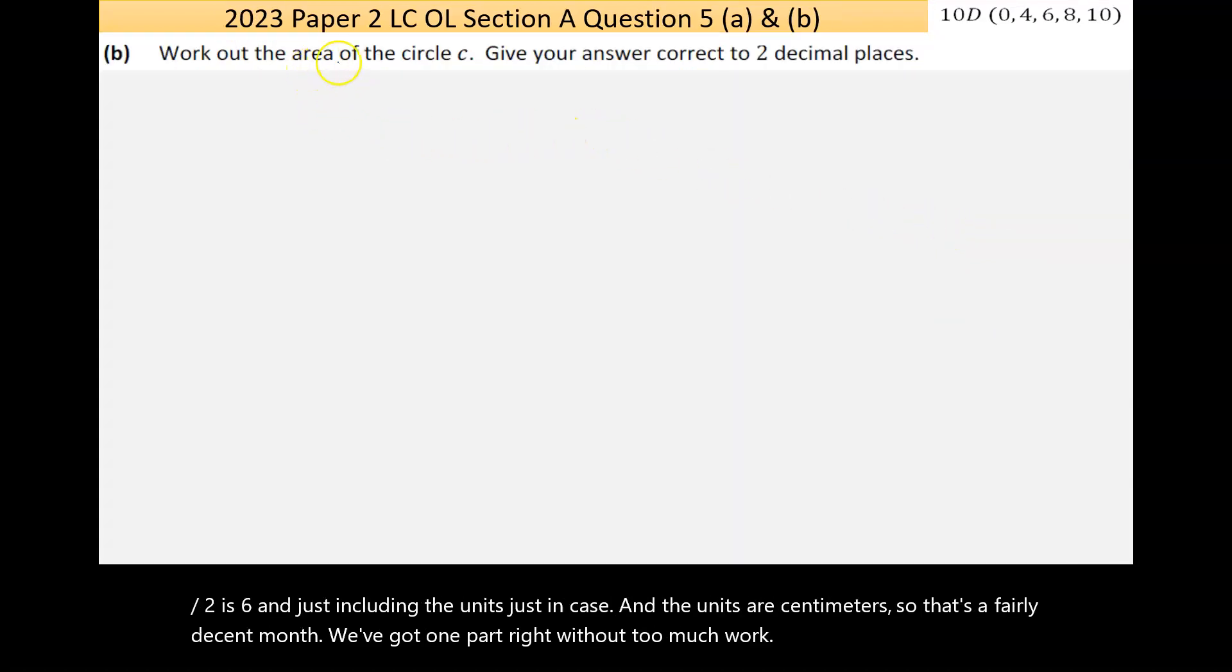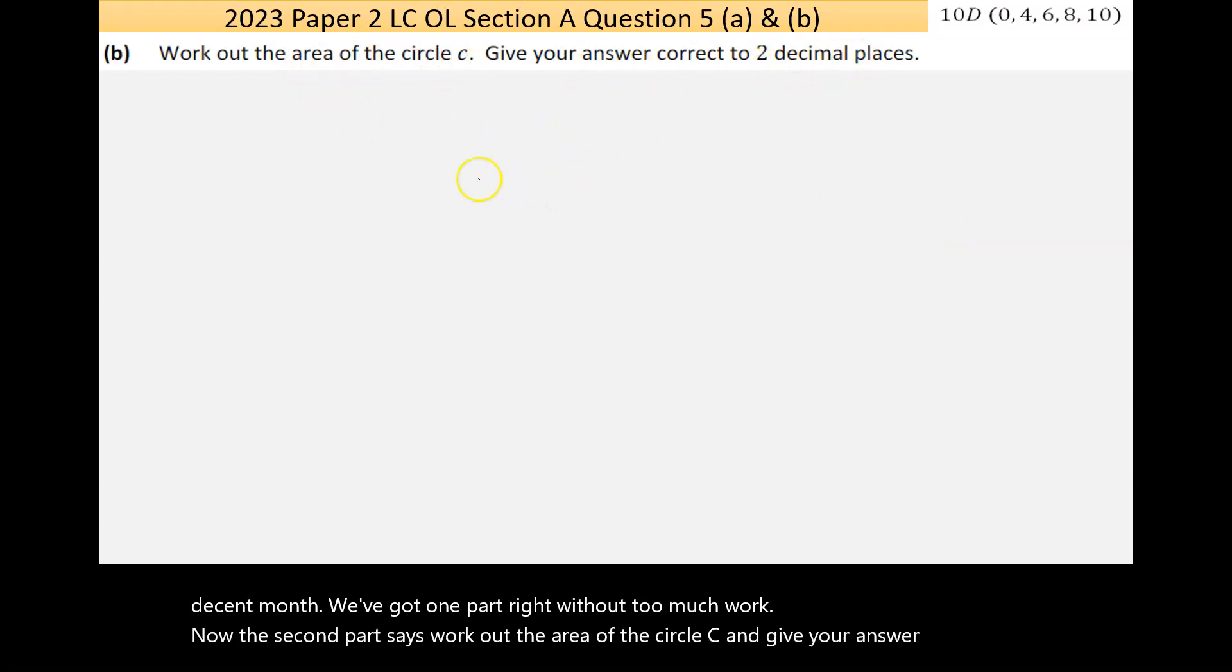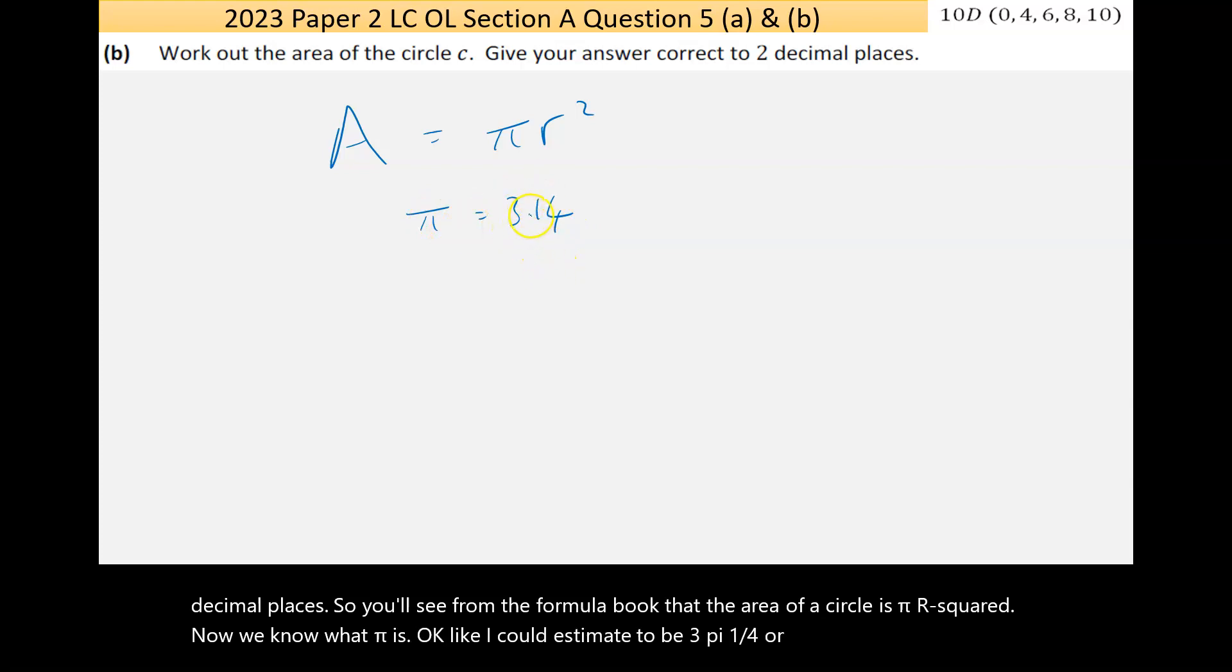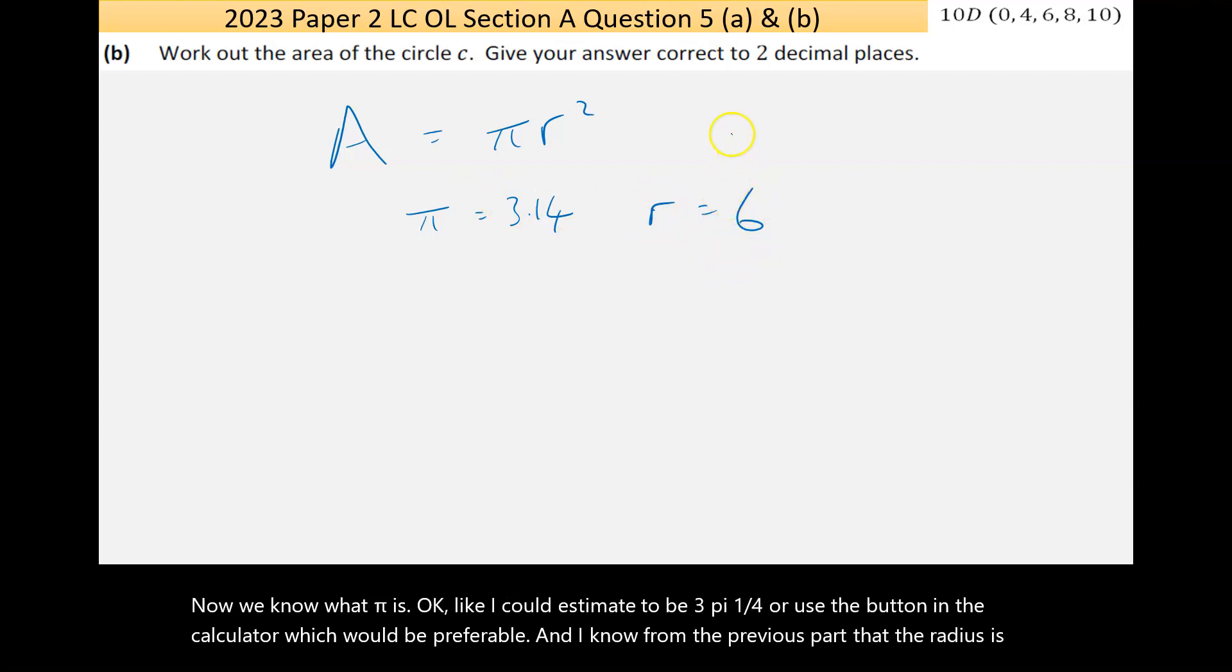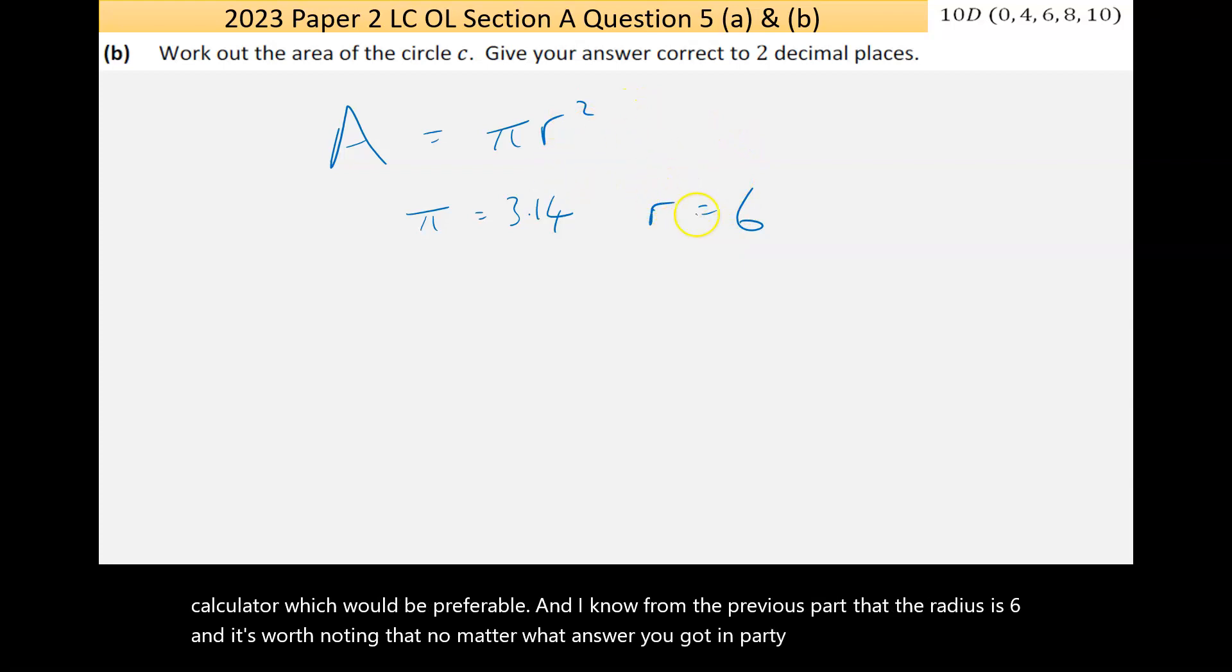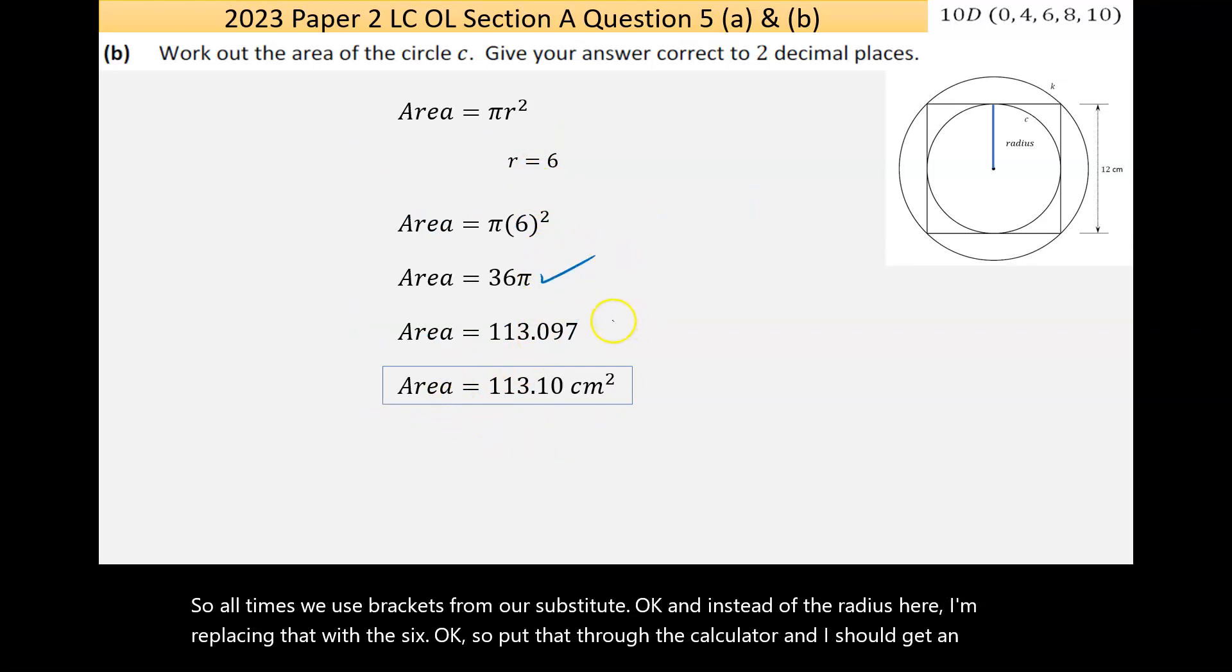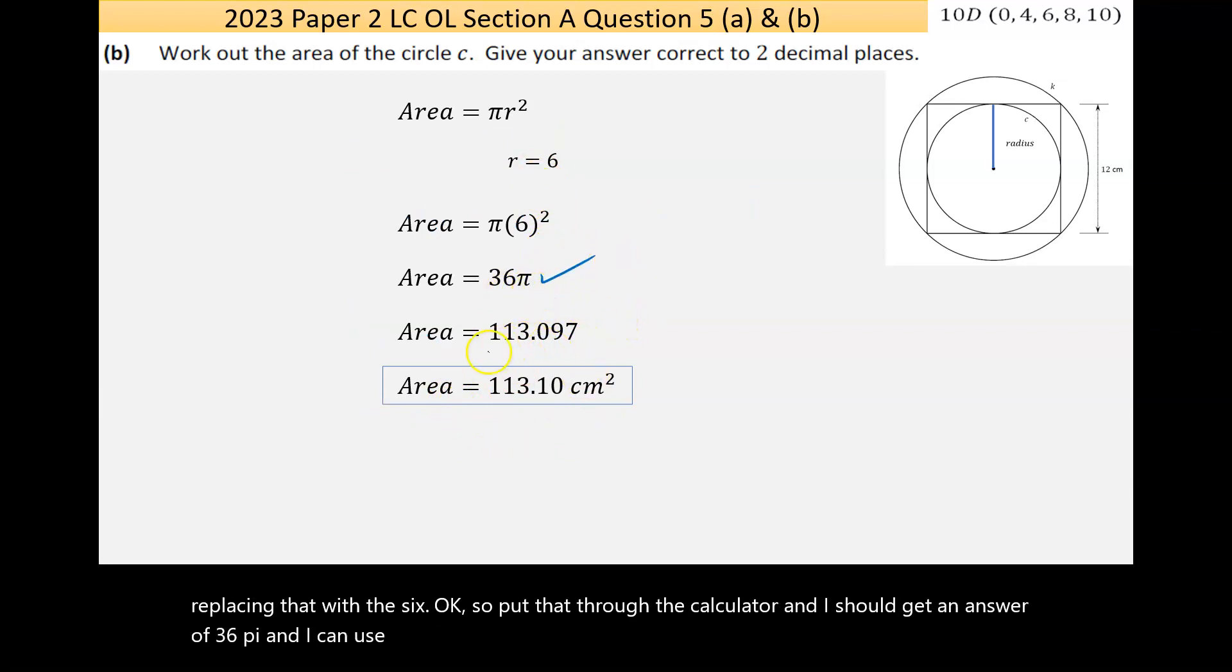Now the second part says work out the area of the circle C and give your answer correct to two decimal places. So you'll see from the formula book that the area of a circle is πr². Now we know what π is—I could estimate it to be 3.14 or use the button in the calculator which would be preferable—and I know from the previous part that the radius is six. And it's worth noting that no matter what answer you got in part A, if you used it in part B it should be accepted as correct. So like always we use brackets when substituting, and instead of the radius here I'm replacing that with the six. So put that through the calculator and I should get an answer of 36π.